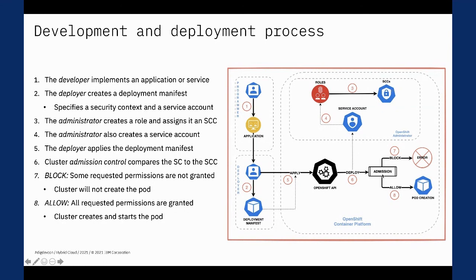When the pod is started, the admission controller decides whether or not it's okay to start the pod. It looks at the permissions in the security context and compares those to the permissions in the SCC. As long as all the required permissions are allowed, the admission controller will allow the pod to deploy. If any of those aren't allowed, it will block the pod. If the admission controller allows deployment, then when the pod creates the container it configures the container as described in the security context, which is why the container will allow the application access to the protected Linux functionality.